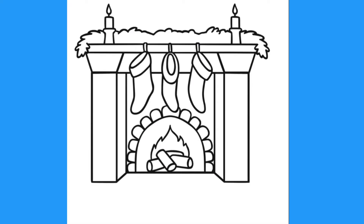Our Listening Comprehension Pack allows children to listen to instructions for how to colour in our lovely Christmas scenes. For example, circle one of the stockings. Colour the candles in yellow. Draw a teddy bear in one of the stockings.